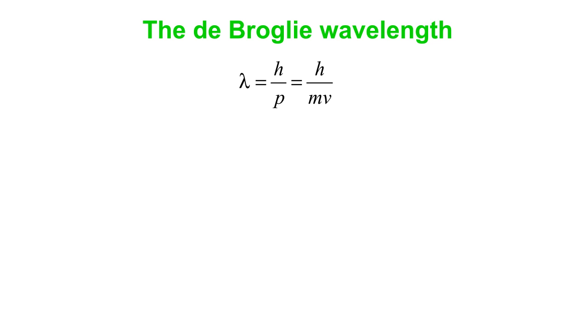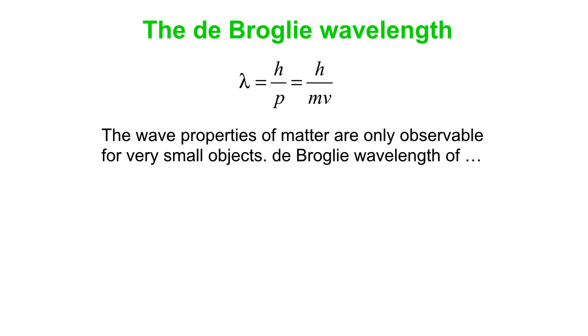What does it mean? Well, the wave properties of matter, things that have mass, are only observable for very small objects. For instance, the de Broglie wavelength of you running at top speed is something like 10 to the minus 36 meters. We've got no way to measure something with a wavelength that small.